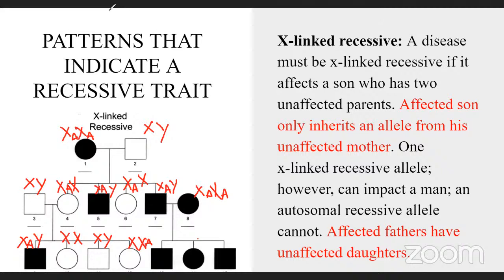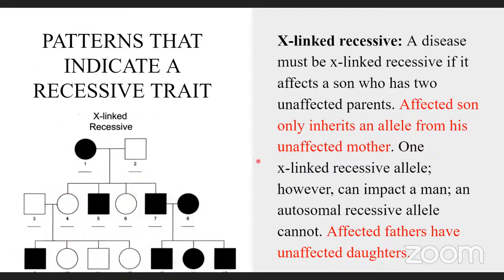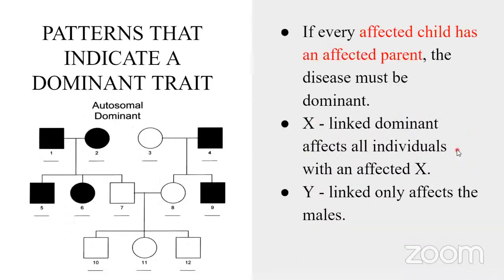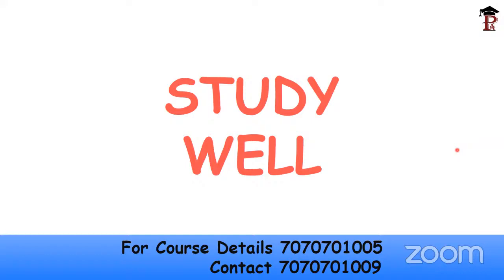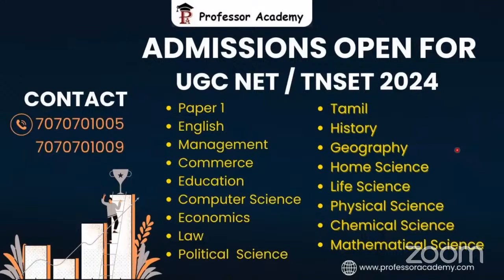Stick to the identifying points when analyzing a pedigree chart, and write down the alleles to confirm your answer. From an exam point of view, you can expect questions on pedigree analysis where you must identify the mode of inheritance — autosomal recessive, autosomal dominant, X-linked recessive, or X-linked dominant. Please make sure to go through this topic thoroughly, as it is very important. Study well, prepare well, and be confident. Thank you all from Professor Academy. Have a nice day.